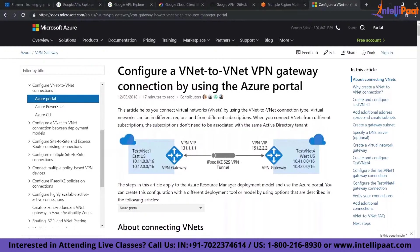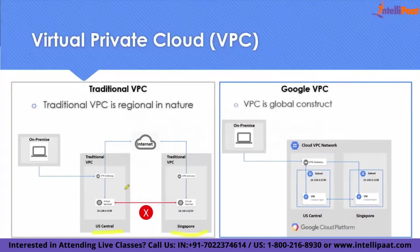But if you come back to Google, Google is very unique — you don't need to have anything. I'll show you that demo in a minute; it takes only two minutes or less. You just create a VM in US Central, create a VM in Singapore, and start communicating — it will work without doing anything. That's how easy it is. The reason is Virtual Private Cloud is global in GCP, whereas in AWS, Azure, or any traditional cloud it is regional.